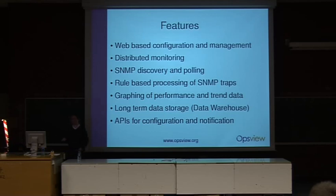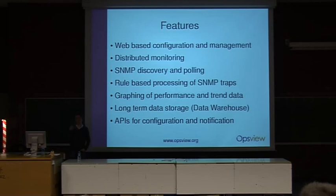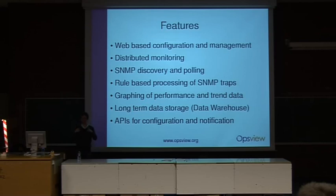We have SNMP discovery and polling — SNMP being the most widely used protocol for monitoring and managing network devices. In OpsView we do a certain amount of discovery and poll network devices to pull information out of them. We also have SNMP trap processing, where network devices send out information pushing it to the monitoring system. We take those traps, aggregate them, and based on a set of rules decide what to do with them — for example, raising a warning alert and sending it out to the network admins.